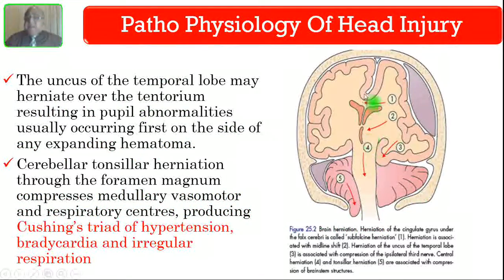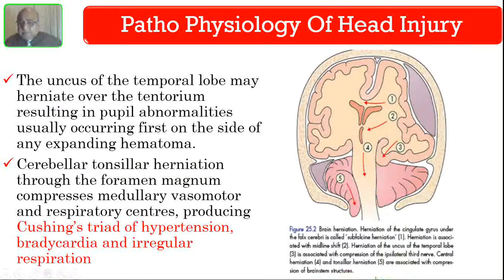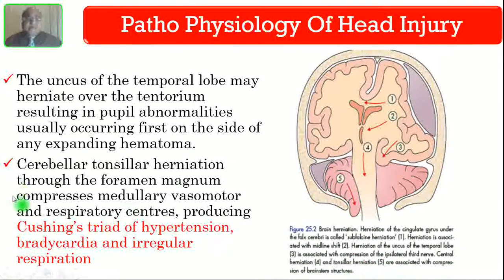Brain herniation can happen in several ways. Number one: the cingulate gyrus can go beneath the falx cerebri — this is called subfalcine herniation. Number two is midline shift. Number three is uncal herniation, which compresses the oculomotor nerve, causing pupillary changes. Number four is central herniation. Number five is cerebellar tonsillar herniation. Both four and five produce what is called Cushing's reflex, consisting of the Cushing's triad of hypertension, bradycardia, and irregular respiration.